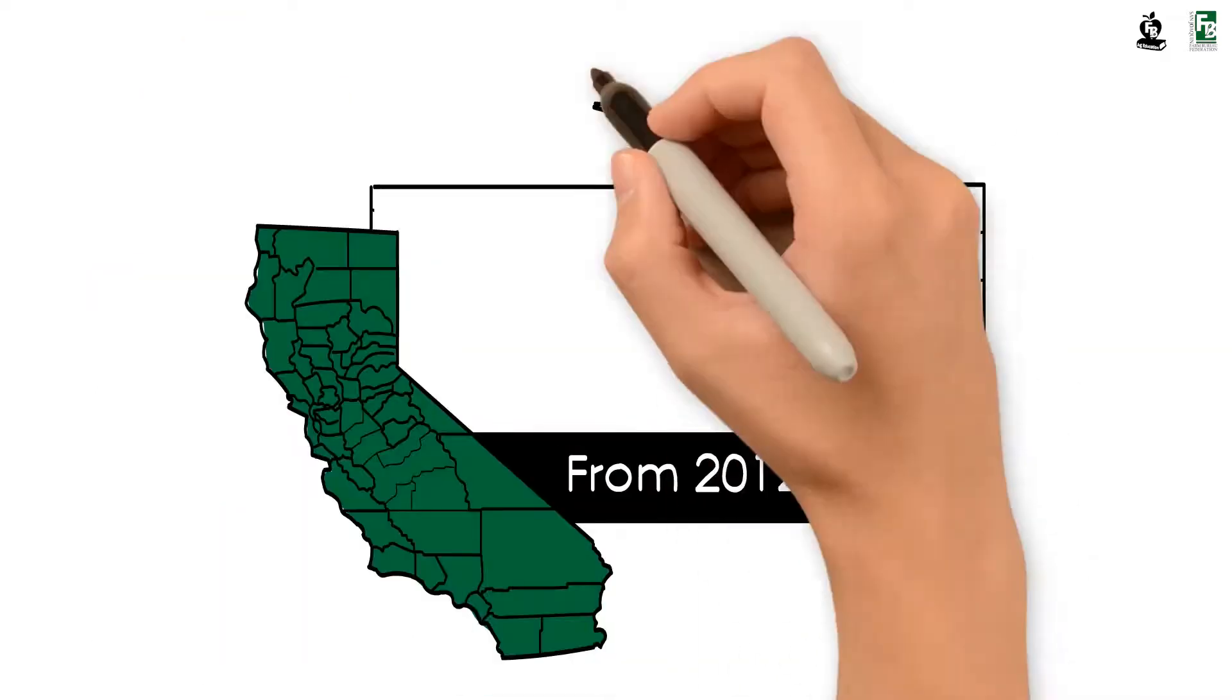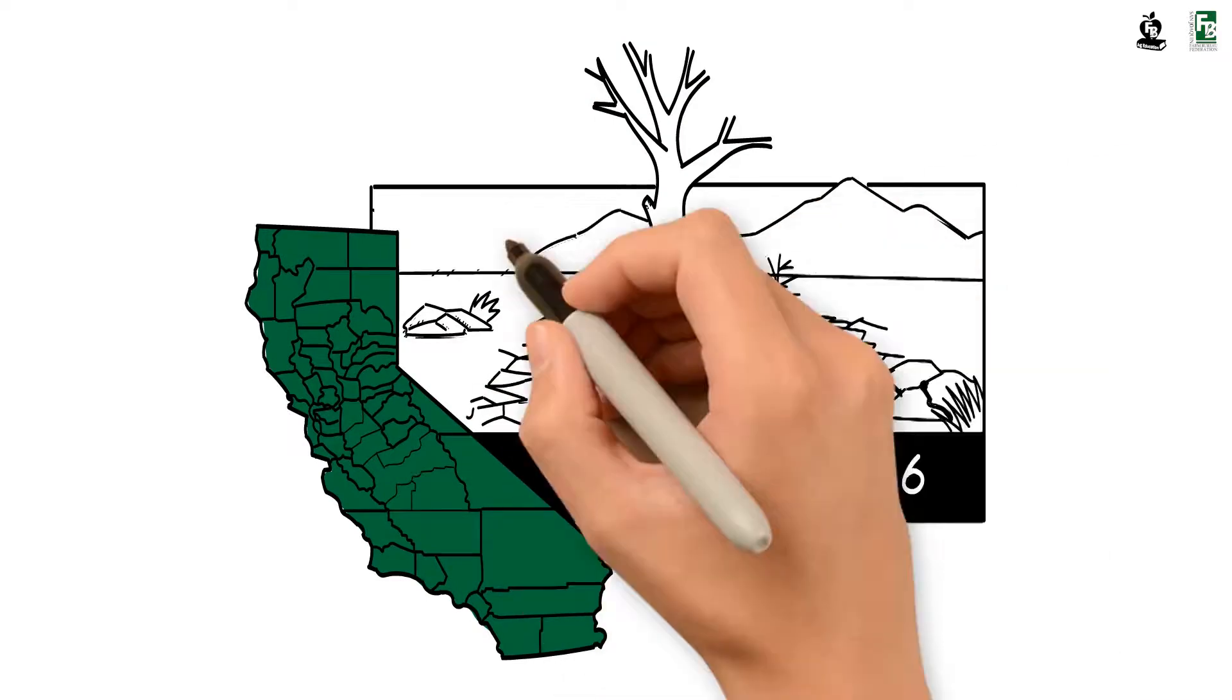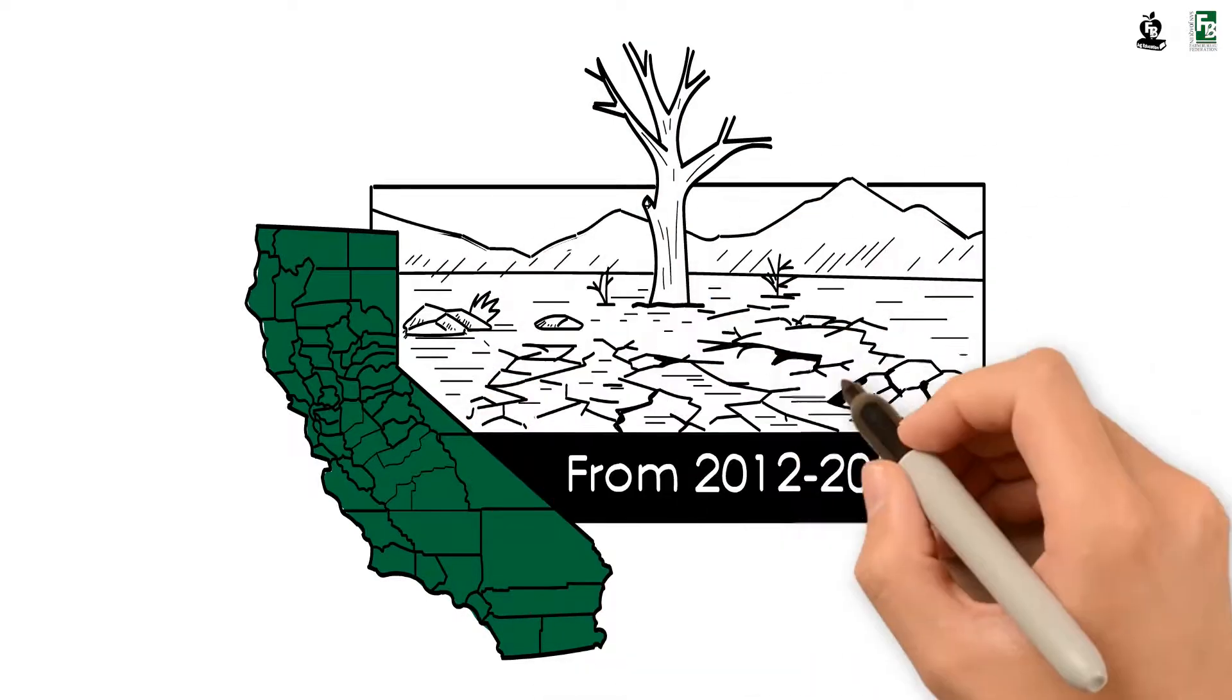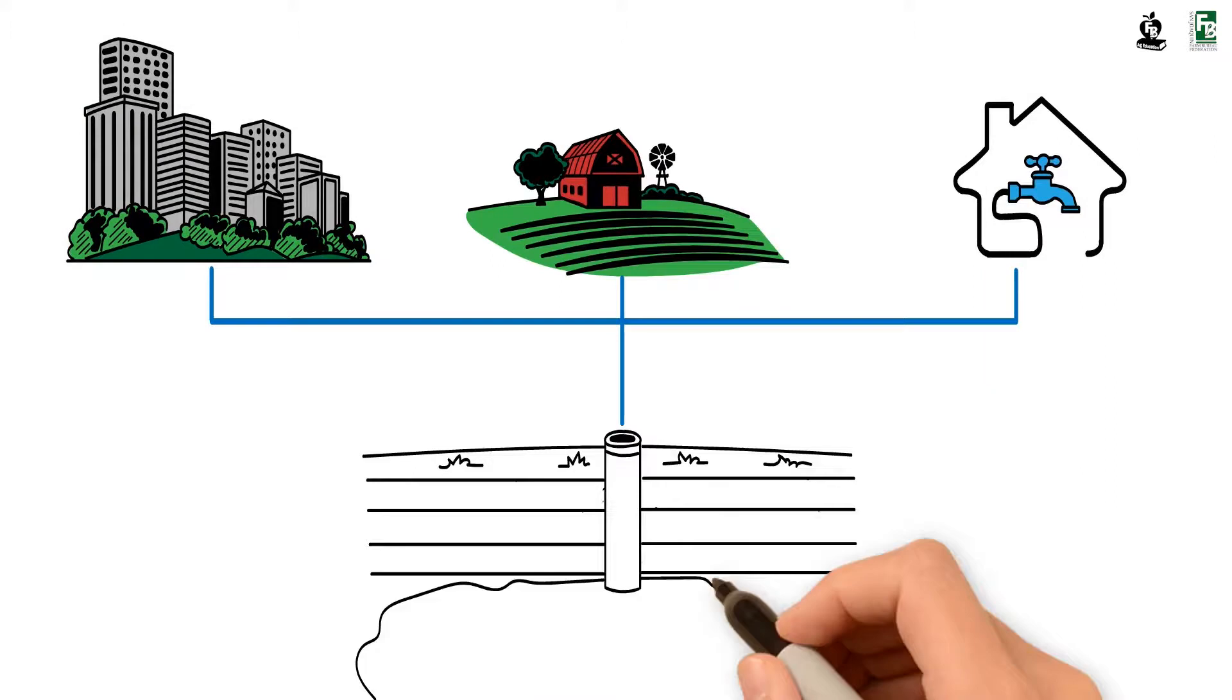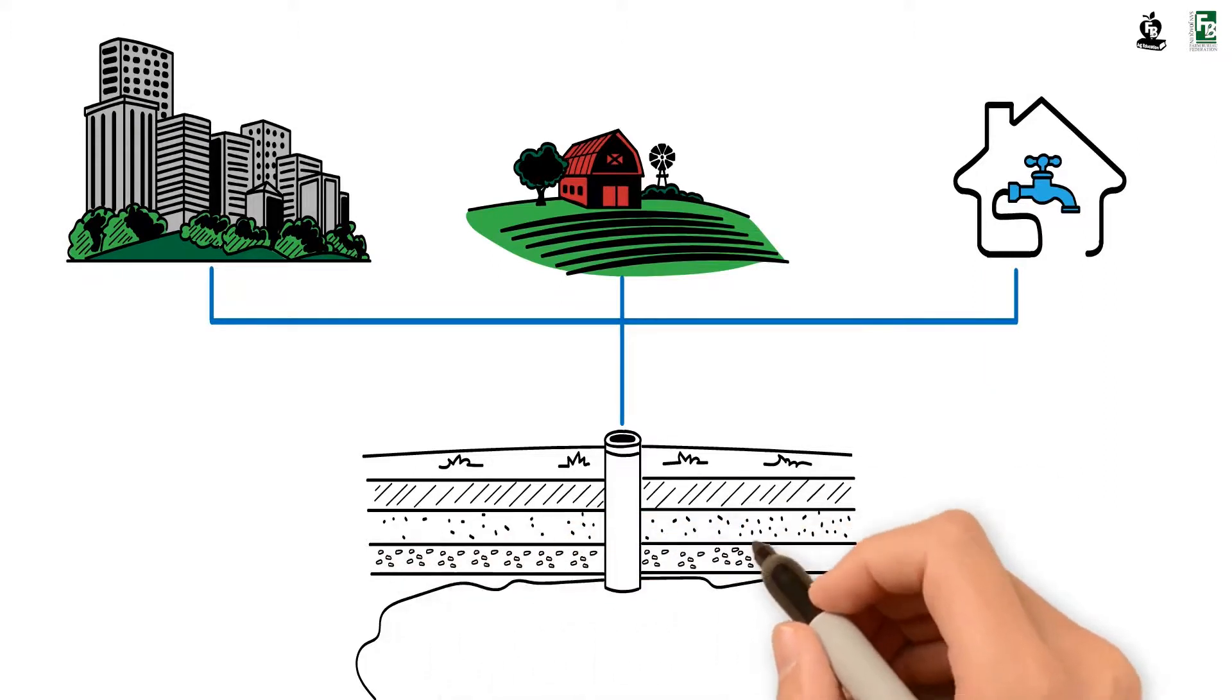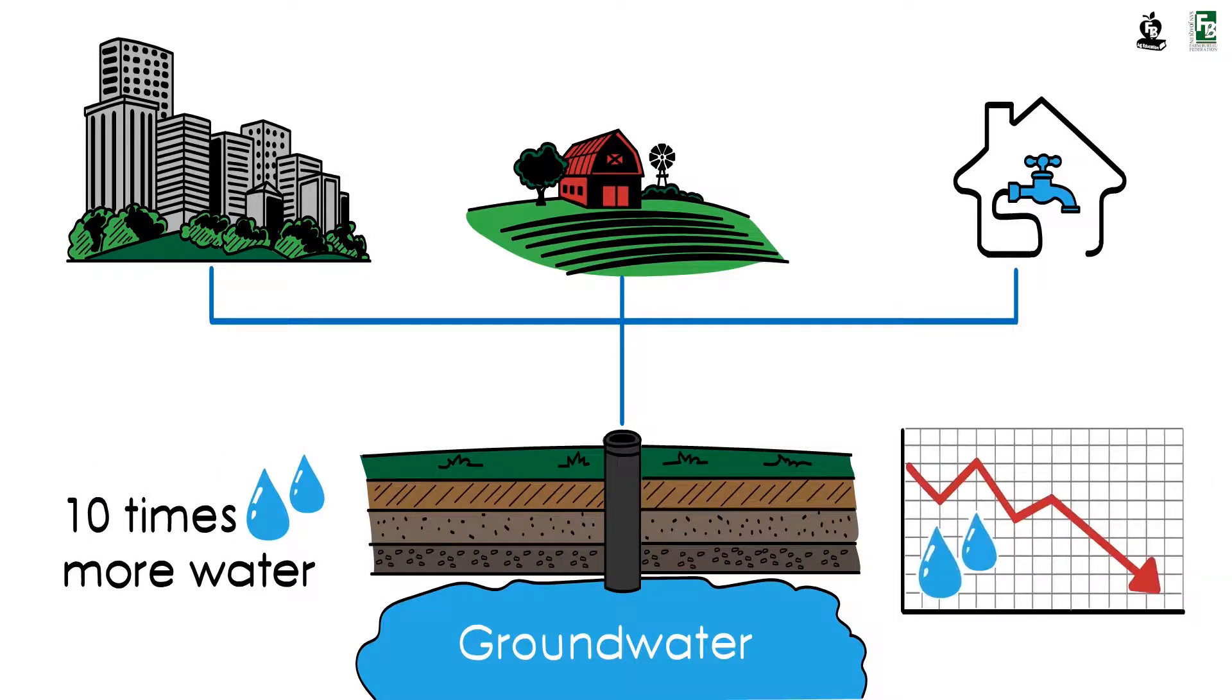From 2012 to 2016, California experienced one of the worst droughts in history. As reservoir levels dropped and rivers were reduced to mere trickles, many cities, farms, and water districts pumped water from underground water basins. Even though the underground water basins contain 10 times more water than California's largest reservoir, groundwater elevations fell.